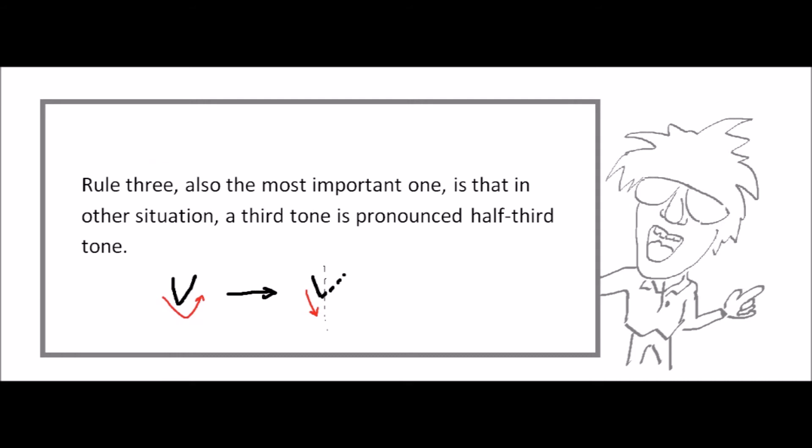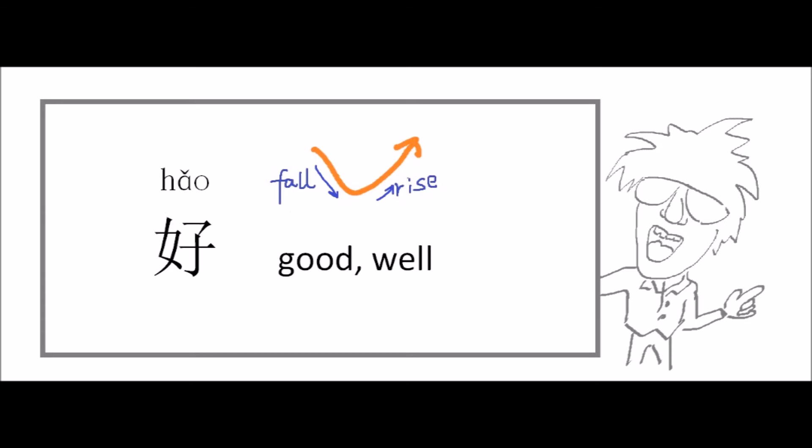Rule 3, also the most important one, is that in other situations, a third tone is pronounced half third tone. So what is a half third tone? We know that the third tone actually has two parts. First is the falling part, then the rising part. 好, 好. And a half third tone means we only finish the falling part. 好, 好.